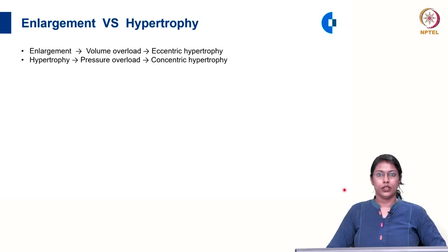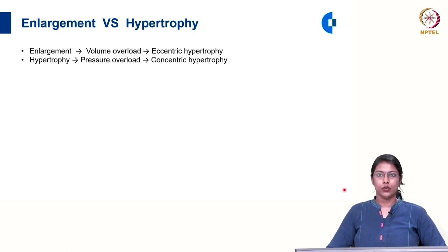The term enlargement is used when there is volume overload of the ventricle causing eccentric hypertrophy — that is, dilatation of the chamber of the heart. The term hypertrophy is used when there is pressure overload of the ventricle causing concentric hypertrophy — that is, increase in the thickness of the myocardial wall.